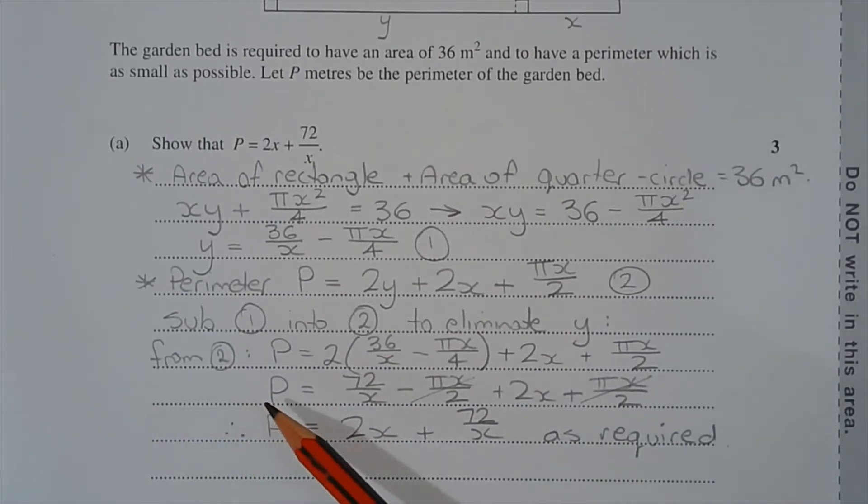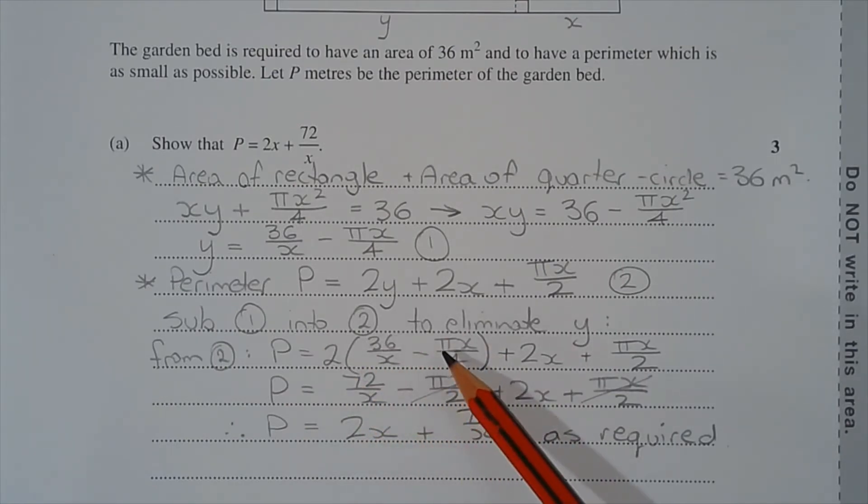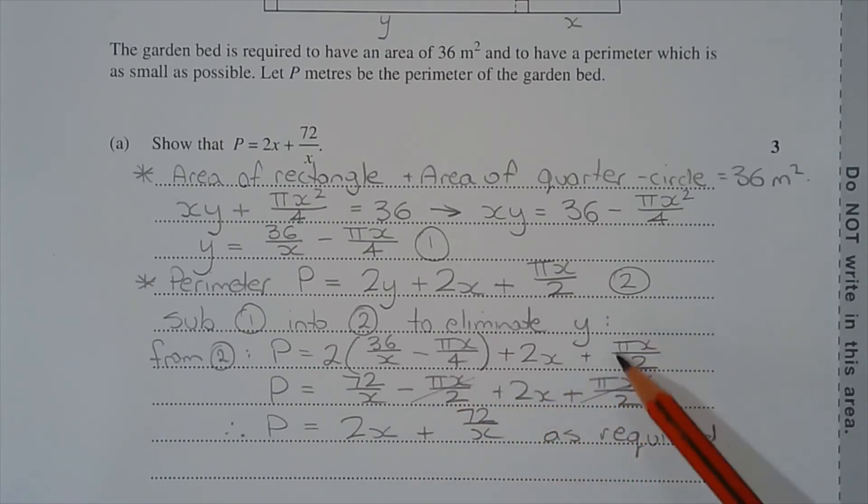So from equation number 2 we have p equals 2, and instead of the variable y we're going to substitute 36 over x minus π x over 4, plus 2x plus π x over 2.